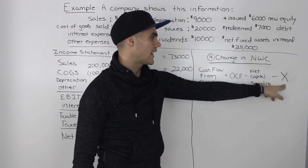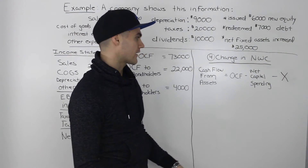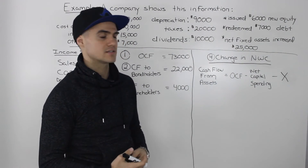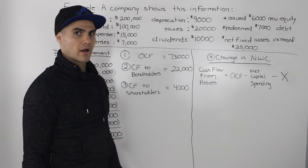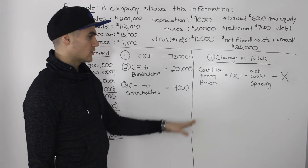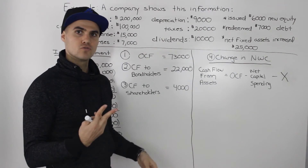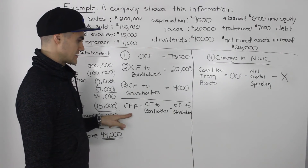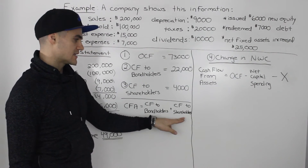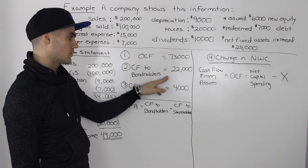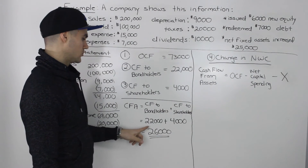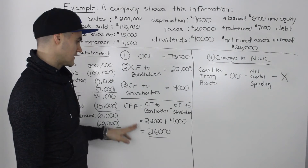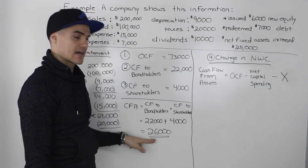Since we're trying to find the change in net working capital, let's call it x and solve for it algebraically. We need three figures. For cash flow from assets, we know it also equals cash flow to bondholders plus cash flow to shareholders — figures we already have. So $22,000 plus $4,000 gives us cash flow from assets of $26,000.